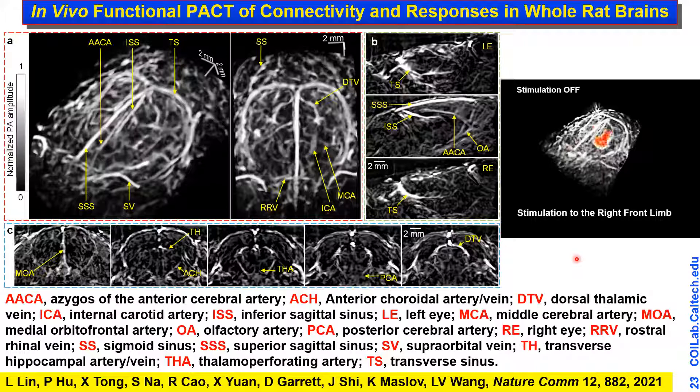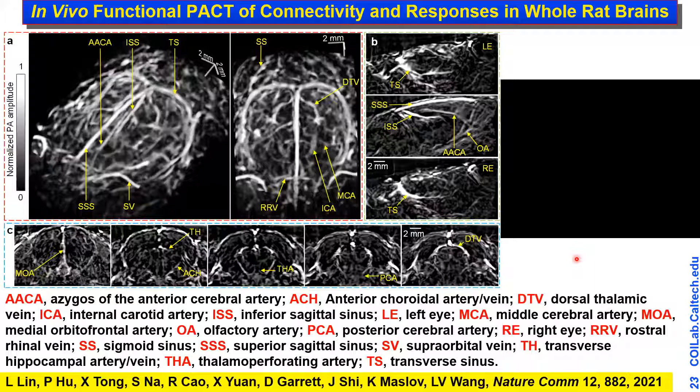Right now we're using endogenous contrast, but imagine coupling this with neural indicators that can image action potentials or calcium indicators. We could provide very deep whole-brain imaging. We're waiting for the right indicators with the appropriate optical wavelength.